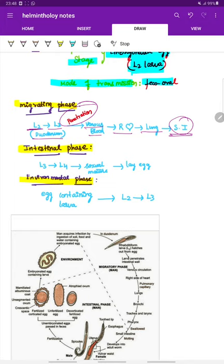Next is the intestinal phase. The L3 gets converted to L4 and it sexually matures, becomes the adult, and then lays eggs. Next is the environmental phase. The egg containing the larva becomes L2 and it further matures into L3. This is the migrating phase, intestinal phase, and the environmental phase.